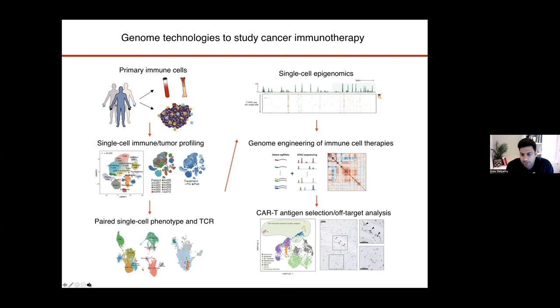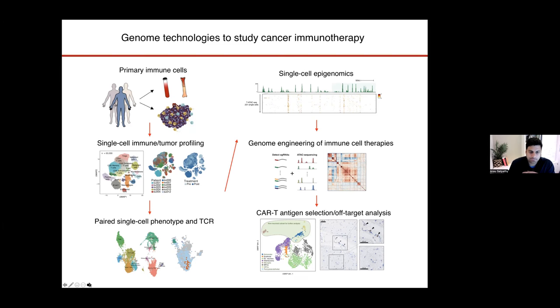We try and understand the gene regulatory mechanisms underlying particular cell states using single-cell epigenomics or other epigenetic methods. Then we try and synthesize all of that information together to rationally design genome engineering or gene editing of immune cells so that we may improve their immune responses to cancer. We also think about tumor cells themselves using some of the same technologies. I'll try and touch upon most of these topics today, really focusing on the process of T cell exhaustion.